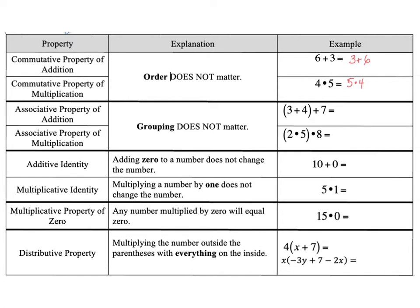So we are moving down to the associative property. Again, the associative property works with both addition and multiplication. So think about what it means to associate yourself with someone. When you associate with someone, you are kind of grouping yourself up with that person or that group. And that is what the associative property does.